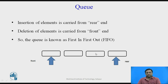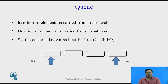Whenever you are going to add an item in the queue, insertion of an element is carried out from the rear end only. The deletion of the element is carried out from the front end. So whenever you are going to remove or delete data from the queue, it is done from the front end only. The queue is known as first in first out, that is FIFO.